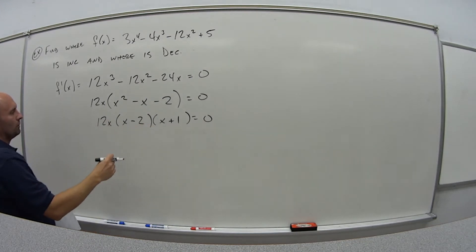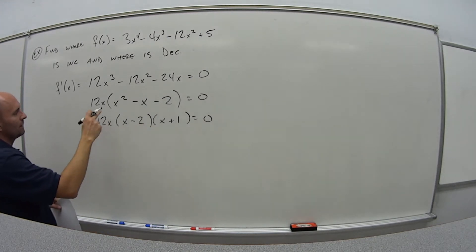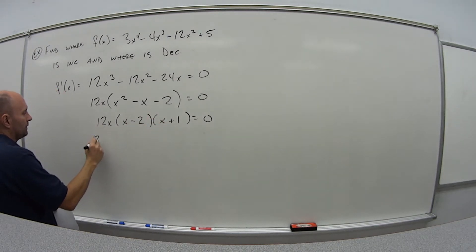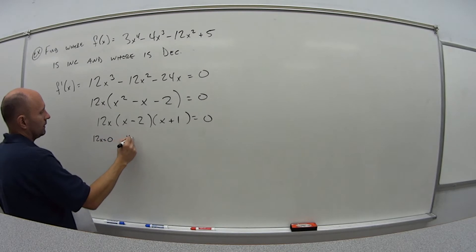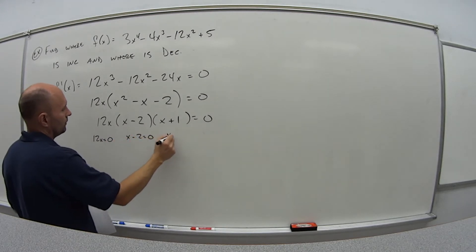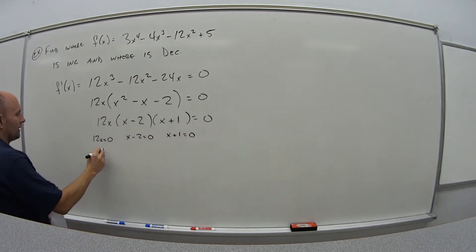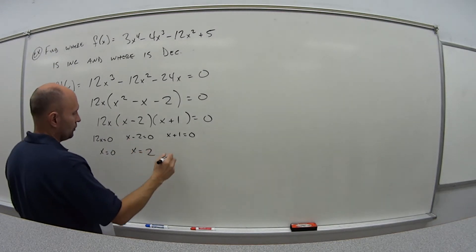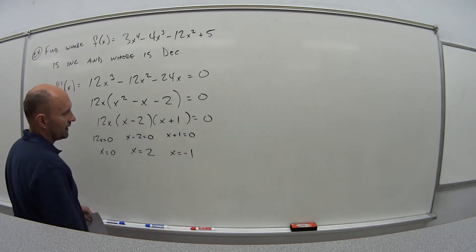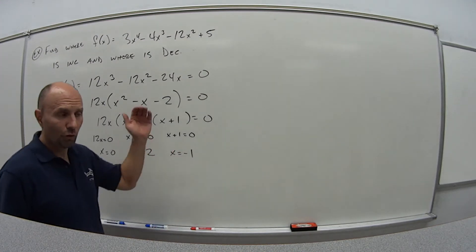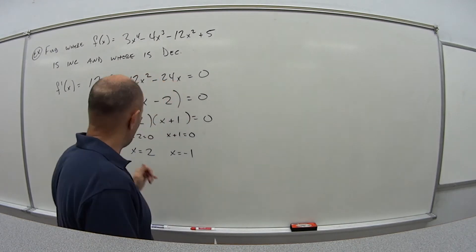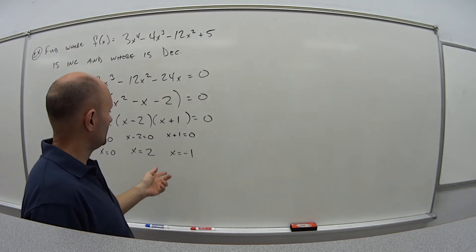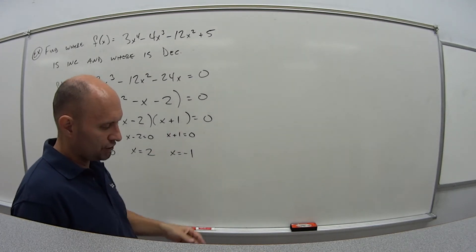By the zero product property, either 12x equals zero, x minus 2 equals zero, or x plus 1 equals zero. So that means x equals 0, x equals 2, and x equals negative 1 are my critical points. I may not know what this curve looks like, but I know at 0, 2, and negative 1, it either changes from increasing to decreasing or vice versa.